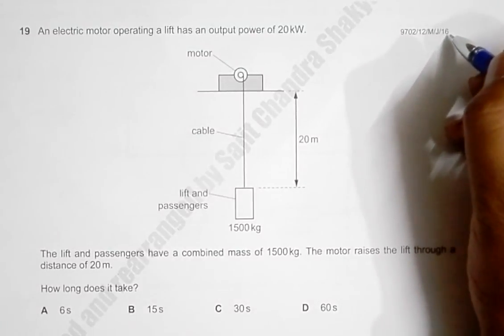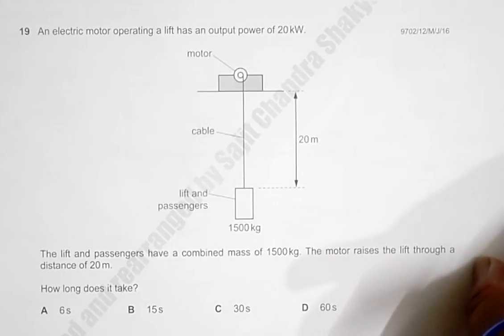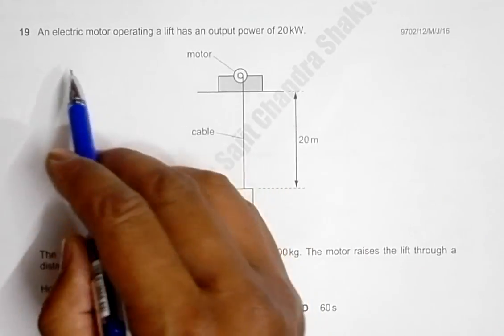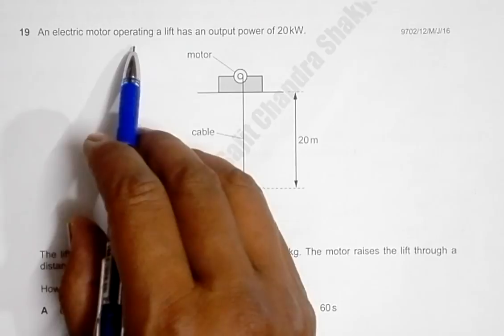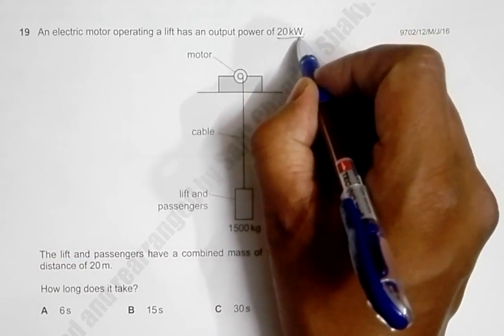This is the question from 2016 May June paper 1-2, question number 19. This shows an electric motor operating a lift has an output power of 20 kilowatts.